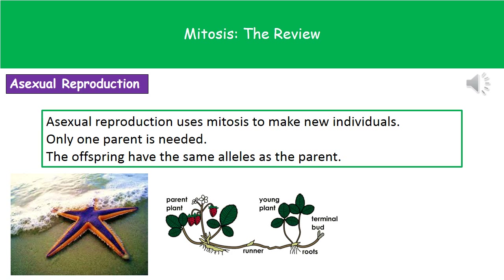A couple of examples of organisms that do this are strawberry plants, spider plants, and starfish — all of those use asexual reproduction.